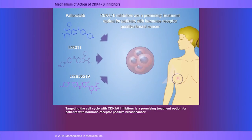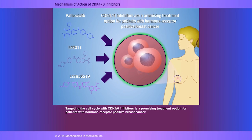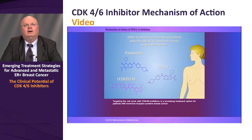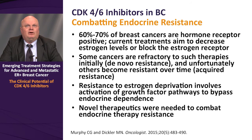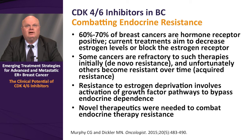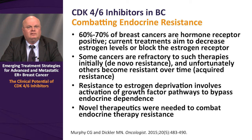Targeting the cell cycle with CDK4-6 inhibitors is a promising treatment option for patients with hormone receptor-positive breast cancer. One of the ideals for treatment of estrogen receptor-positive breast cancer would be to overcome endocrine resistance pathways. Sixty to seventy percent of breast cancers are hormone receptor-positive. Current treatments aim to decrease ER levels and/or block the estrogen receptor. Some cancers are refractory to such therapies initially — de novo resistance — and others become resistant over time, exhibiting acquired resistance. Resistance to estrogen deprivation involves activation of growth factor pathways to bypass endocrine dependence.